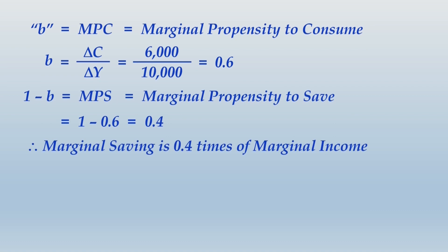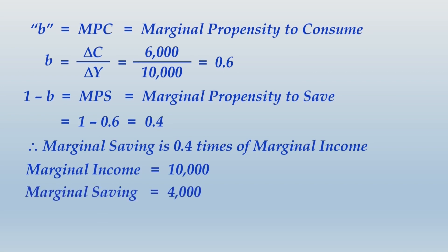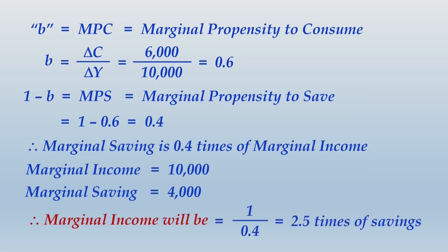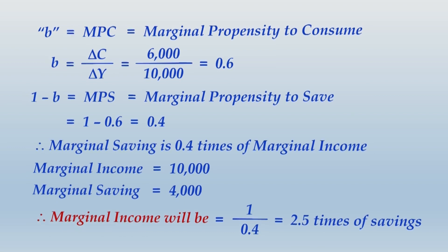Marginal saving is 0.4 times marginal income. If marginal income is 10,000, marginal savings will be 4,000. Looking at this in reverse — how many times does marginal income stand against marginal savings? Simply take 10,000 / 4,000 = 2.5 times. So marginal income is 1 / 0.4 = 2.5 times savings.